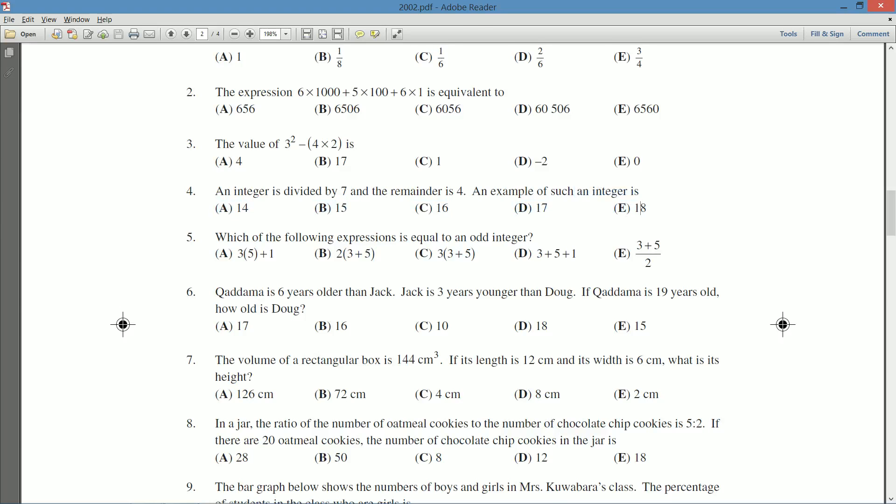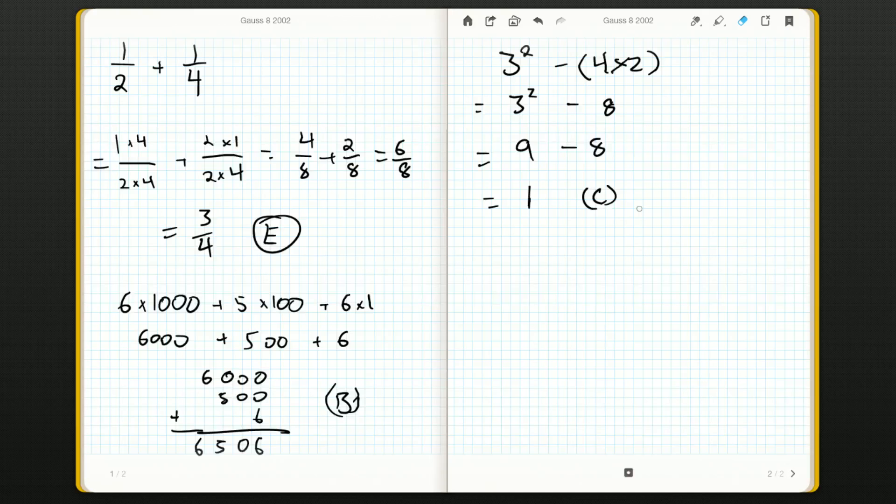So no reason not to go left to right. We'll start with 14. You can grab your calculator if you want, or you can just do the long division. Seven goes into 14 two times, but it leaves a remainder of zero. So A isn't going to be the answer.